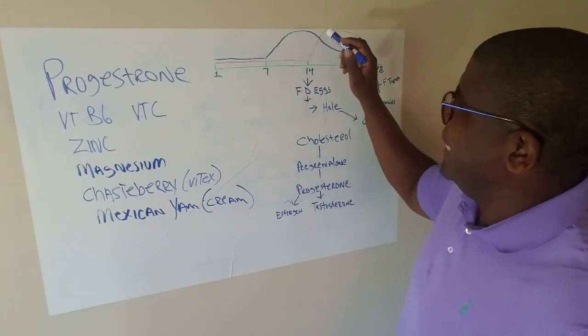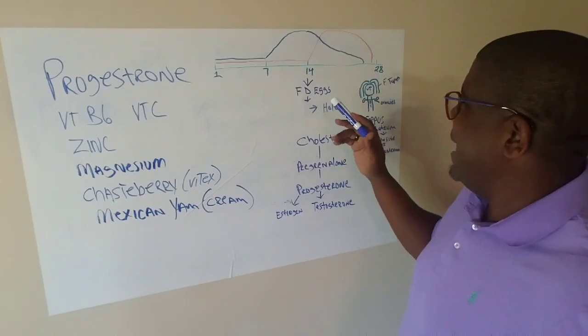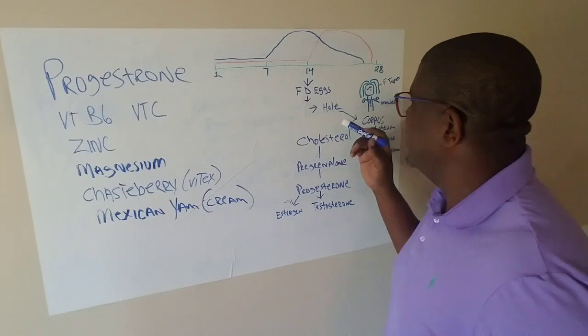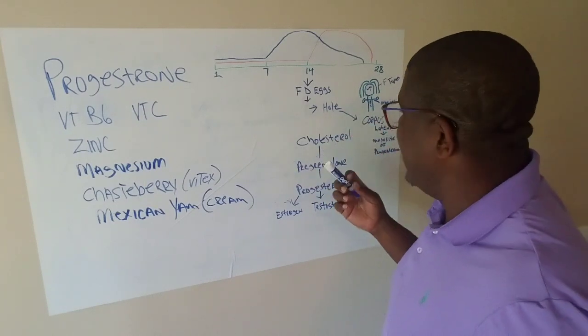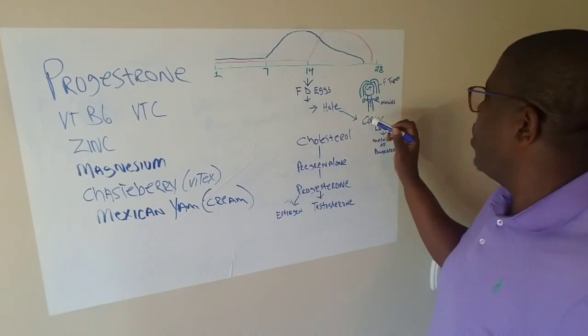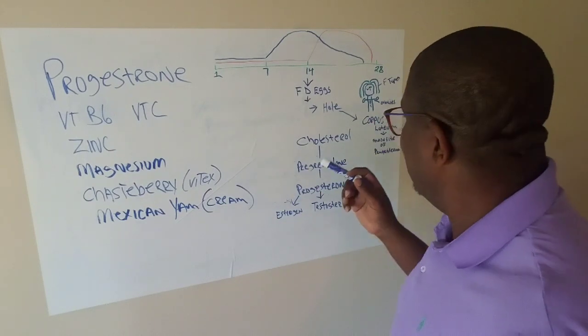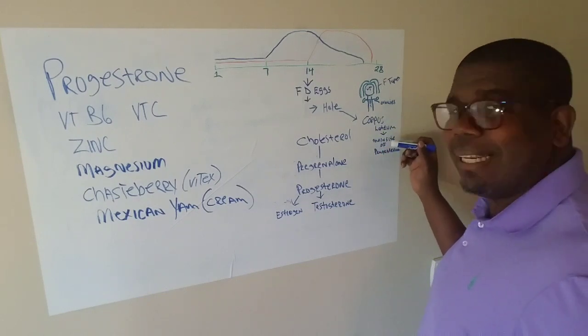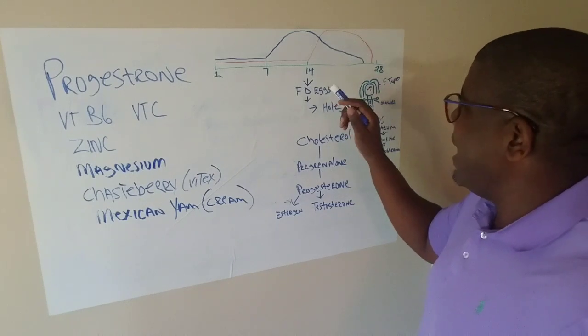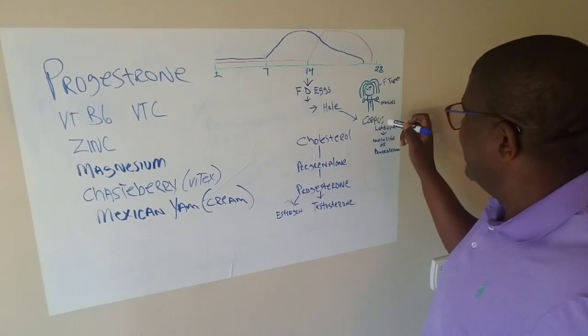At day 14, estrogen has reached its peak. It has fully developed eggs and now those eggs are ready to be taken up into the fallopian tubes. The key to this when it comes to progesterone is, once the fallopian tubes suck those eggs in, it creates what is called a hole, and this hole is called the corpus luteum. This is what corpus luteum is. Why is corpus luteum important? Because it is the main site of progesterone production.